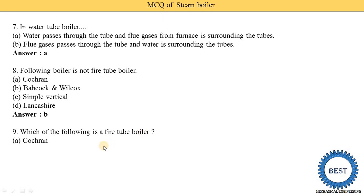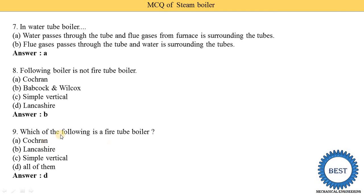Another MCQ: which of the following is a fire tube boiler? Options are Cochrane boiler, Lancashire boiler, simple vertical boiler, and all of them. The answer is option D — all of them — because Cochrane, Lancashire, and simple vertical are all fire tube boilers.